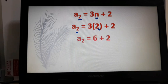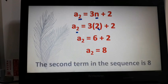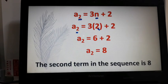So 3 times 2, that will give us 6. 6 plus 2 will give us 8. So our a_2 in the sequence is equal to 8.